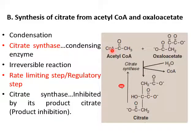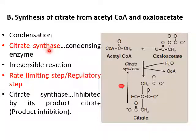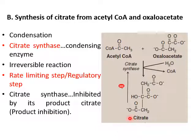In the first reaction, acetyl-CoA condenses with oxaloacetate, which is a four-carbon compound. As a result, we get citric acid or citrate. This is a condensation reaction and the enzyme used is citrate synthase. This reaction is irreversible and is the rate-limiting step of Krebs cycle. It is regulated through product inhibition — if citrate is present in high concentration, it inhibits citrate synthase, blocking the Krebs cycle.